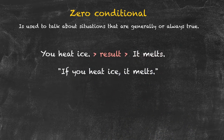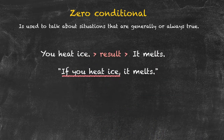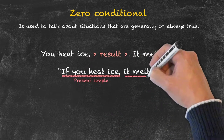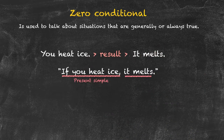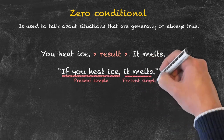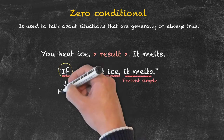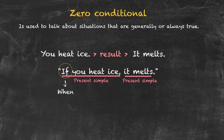Let's have a look at the structure of this sentence. The first part of the sentence — the first clause — 'if you heat ice,' is using the tense present simple. The second clause is also using the tense present simple. And we have 'if' at the beginning of the sentence. 'If' could be substituted by the word 'when' to indicate the total certainty of the thing happening.